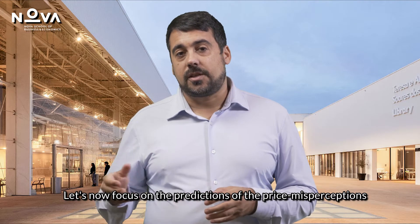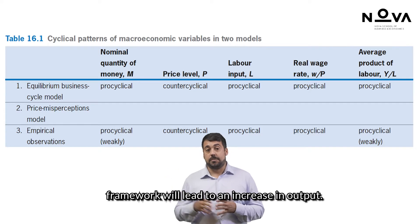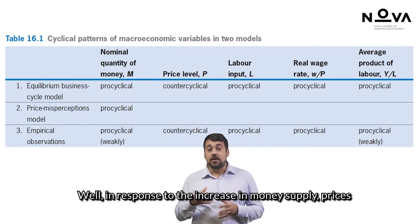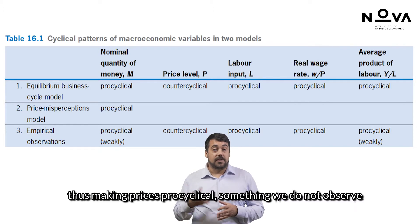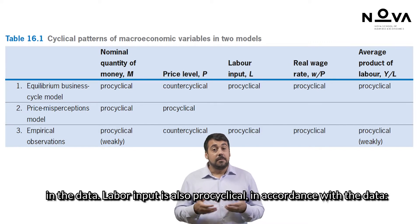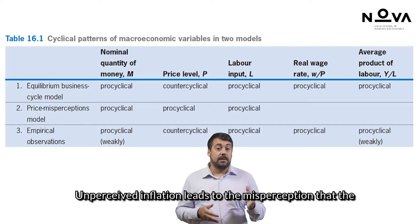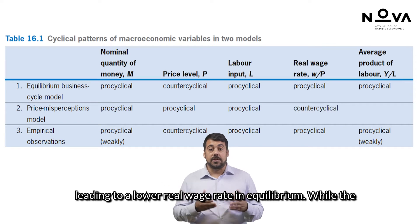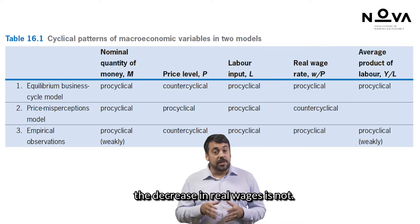Let's now focus on the predictions of the price misperceptions model. We just found that an increase in money supply in this framework will lead to an increase in output. Hence, money is pro-cyclical. In response to the increase in money supply, prices will increase along the money demand schedule to a higher equilibrium price level, thus making prices pro-cyclical — something we do not observe in the data. Labor input is also pro-cyclical in accordance with the data. Unperceived inflation leads to the misperception that the real wage increased and households increase labor supply, leading to a lower real wage rate in equilibrium. While the increase in labor supply in expansions is backed by the data, the decrease in real wages is not.